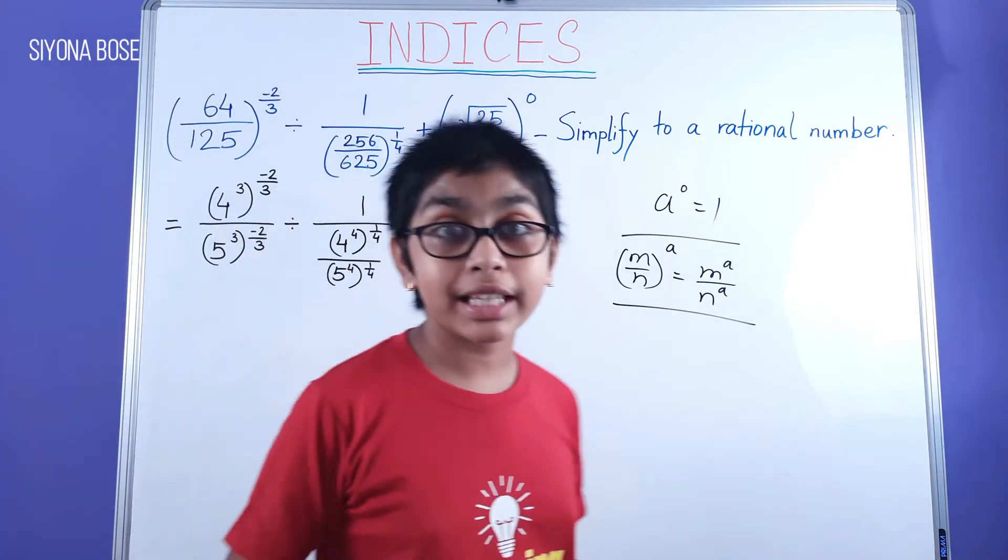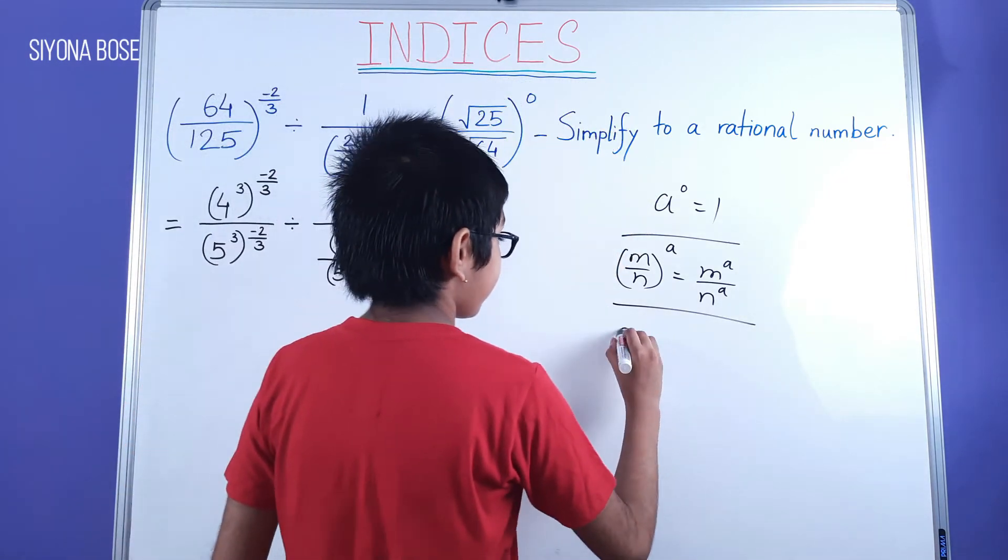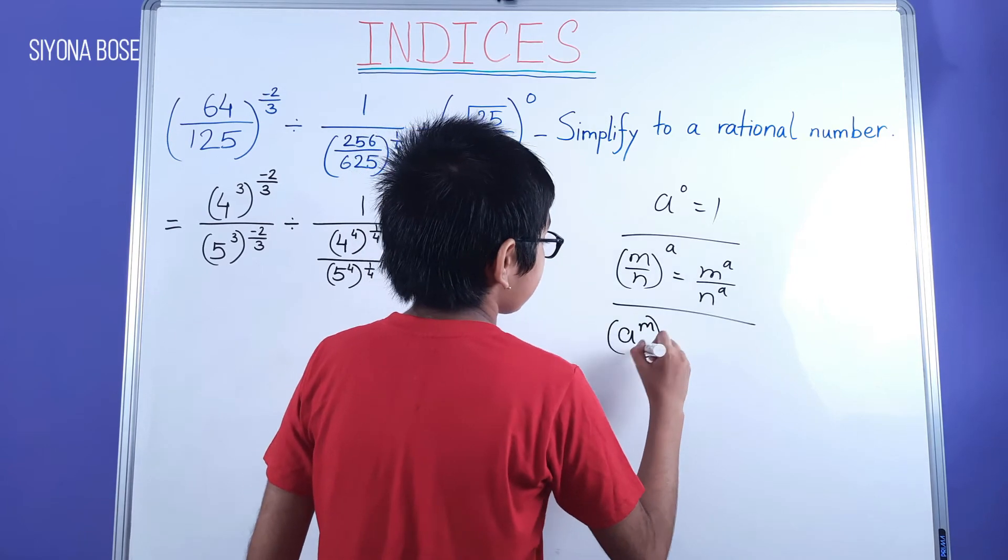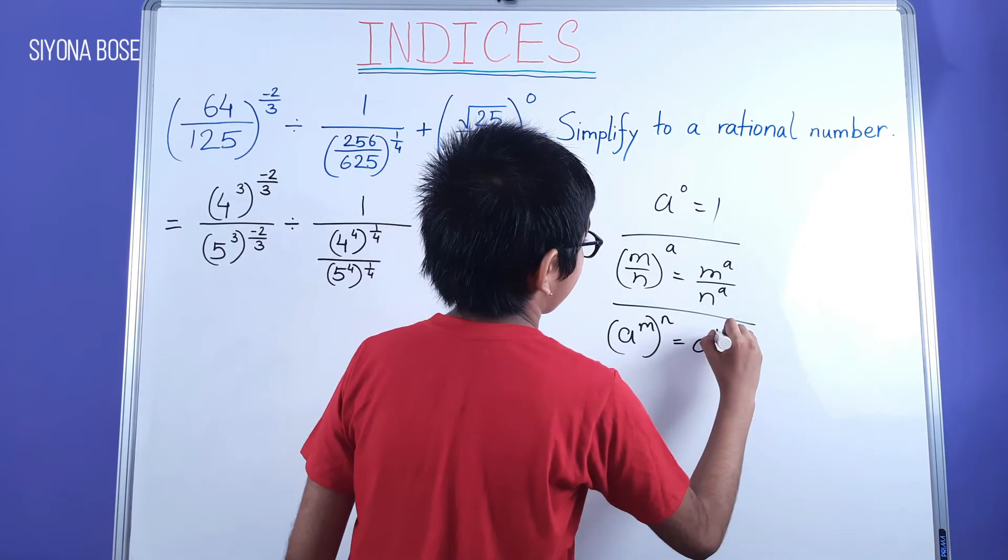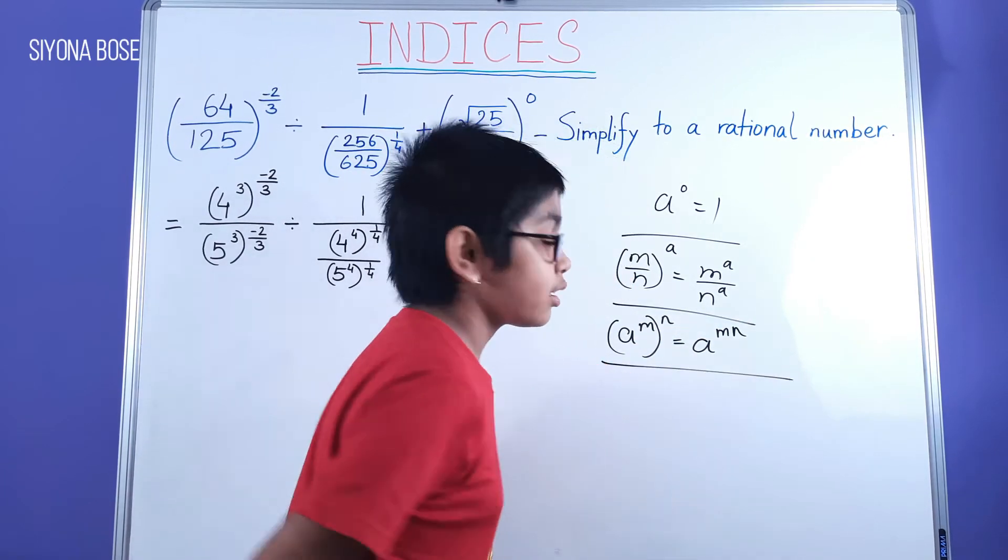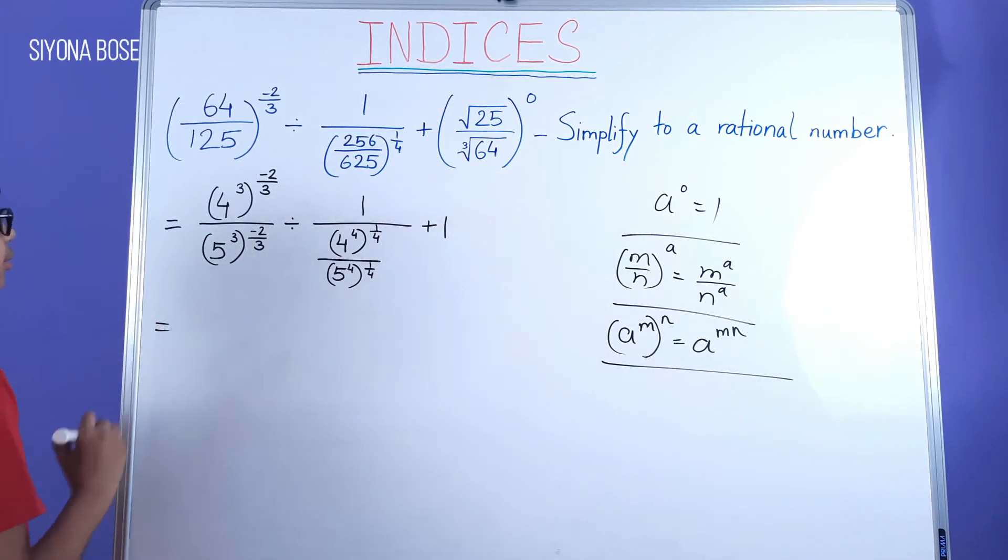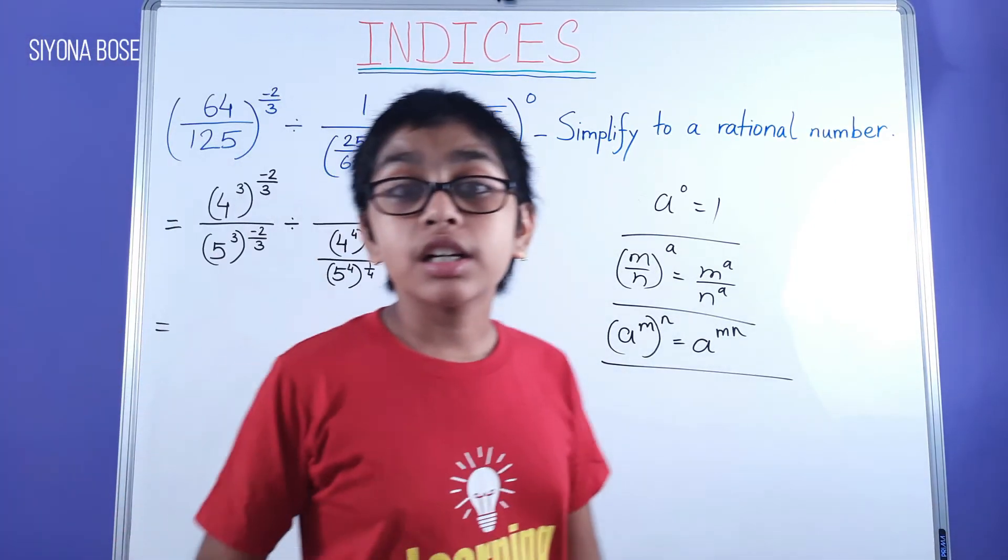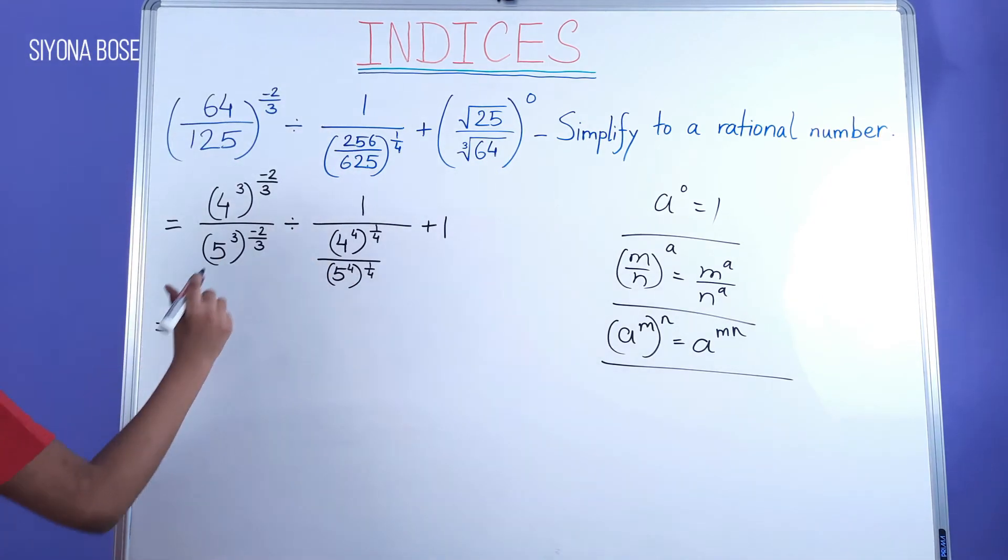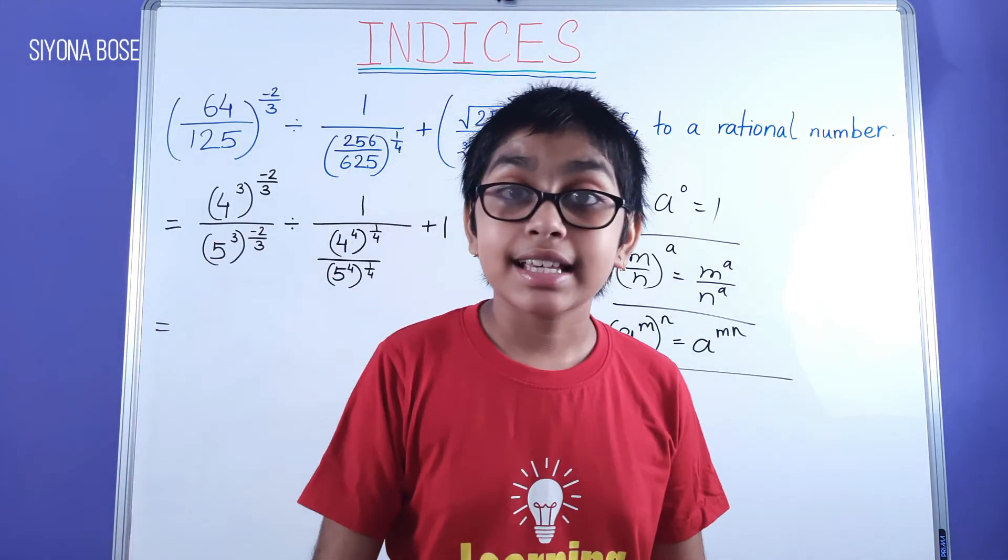We stopped here, and we know that if it's like a to power of m, hold the power of n, it's equal to a to power of mn. Knowing that, we get over here, 4 to power of minus 2, because 3 and 3 gets cancelled. As well, 3 and 3 gets cancelled.